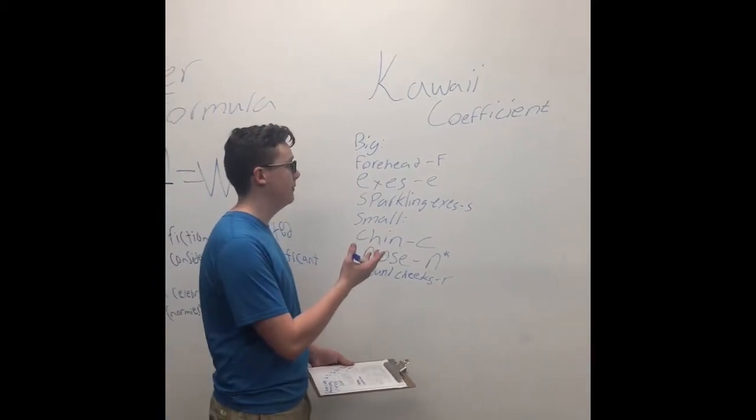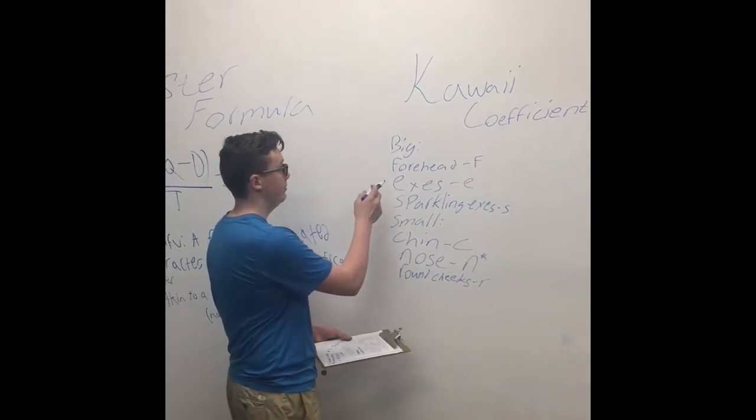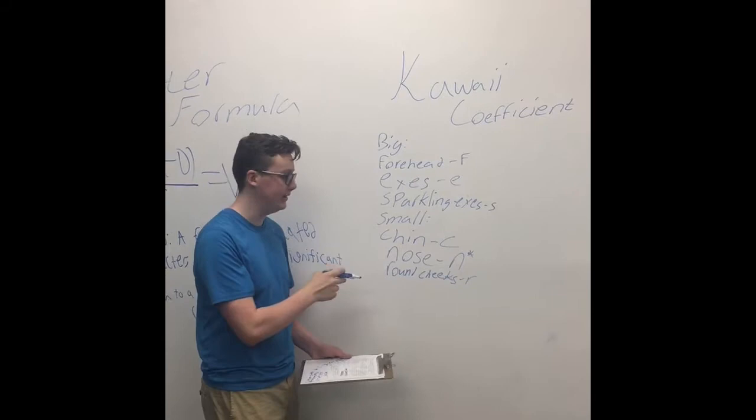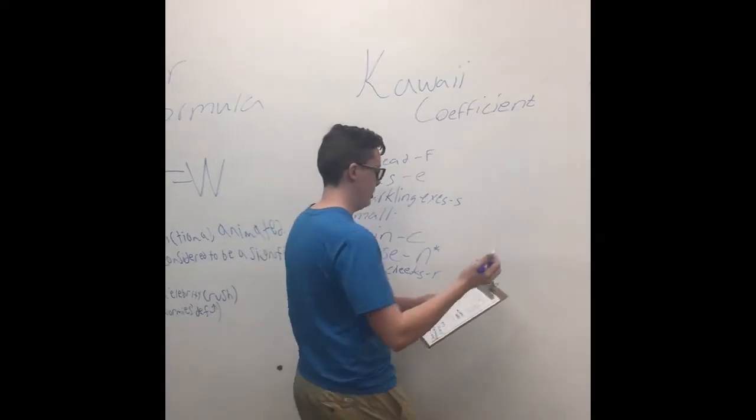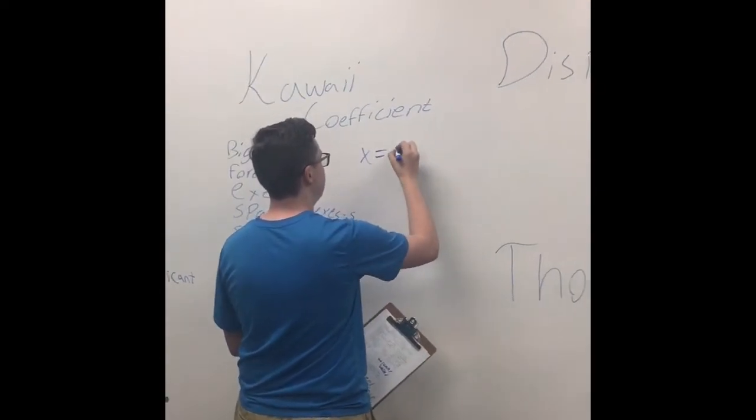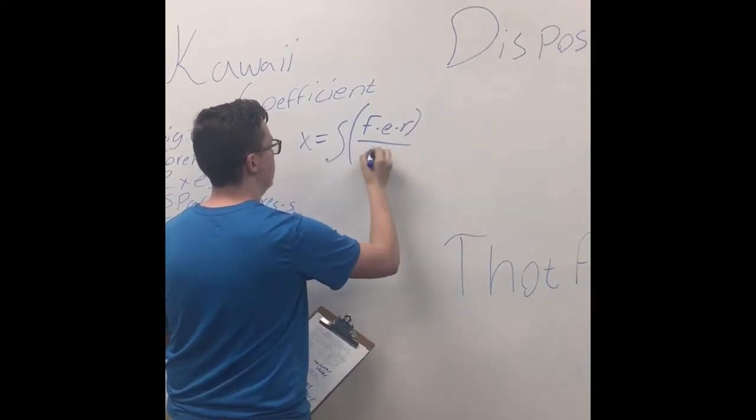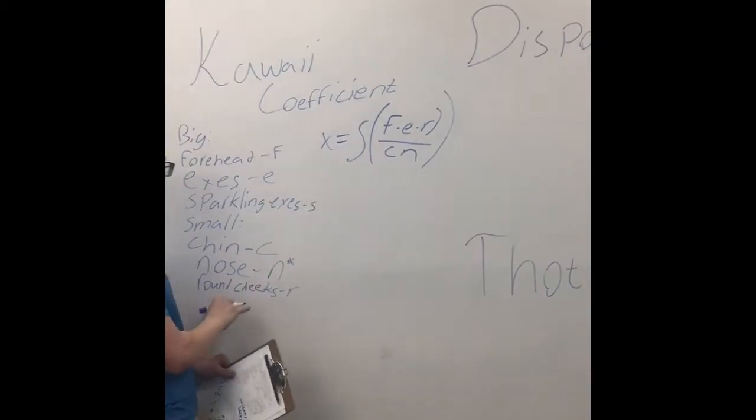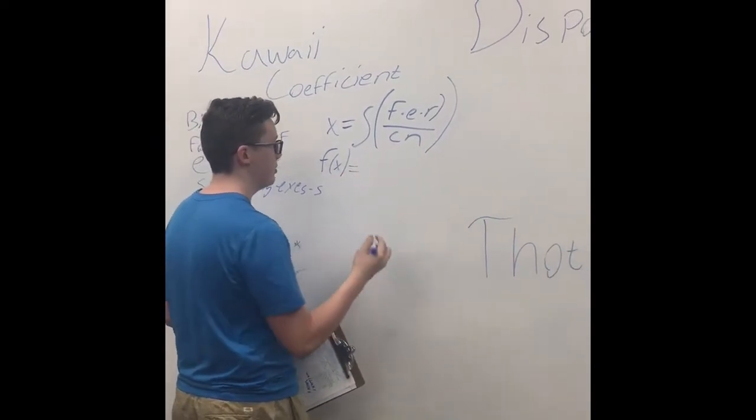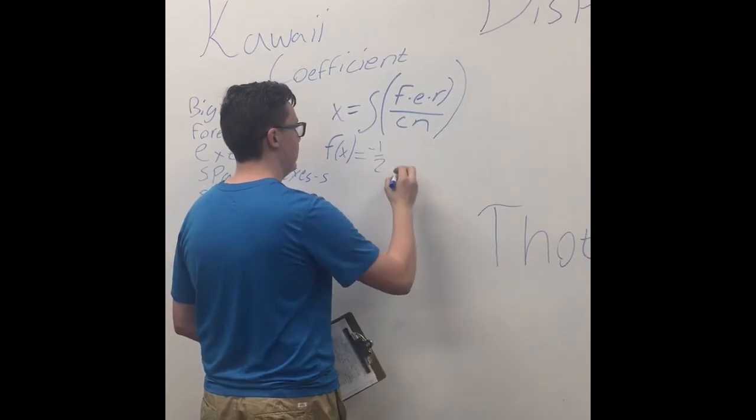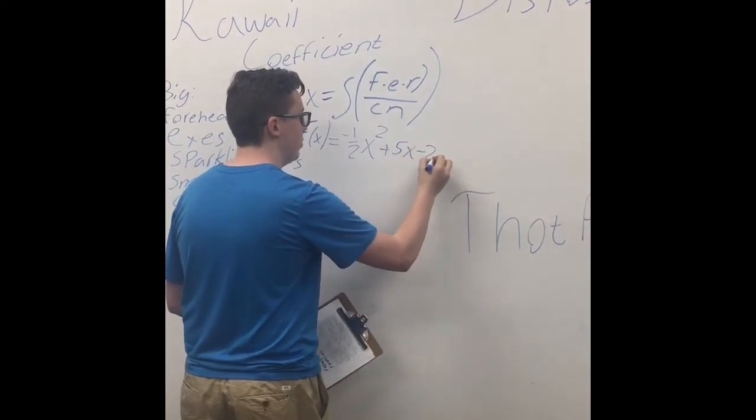And now we have the kawaii coefficient. The kawaii coefficient is a measure of a waifu's cuteness. Now, a waifu typically has proportionately large forehead and eyes with sparkling eyes and small chin and nose with small round cheeks. The kawaii coefficient is a ratio of x equals sf times e times r over cn. Now you enter in all your values into that to get your kawaii coefficient. To find the optimum point on this, we have the equation negative one-half x squared plus 5x minus 2.5.